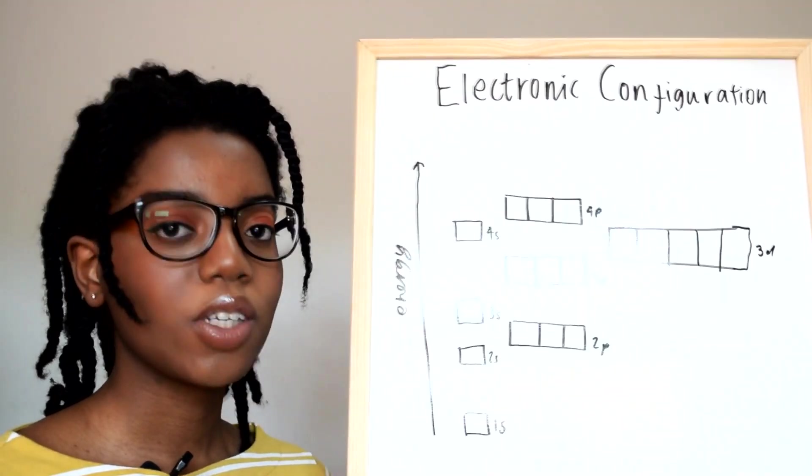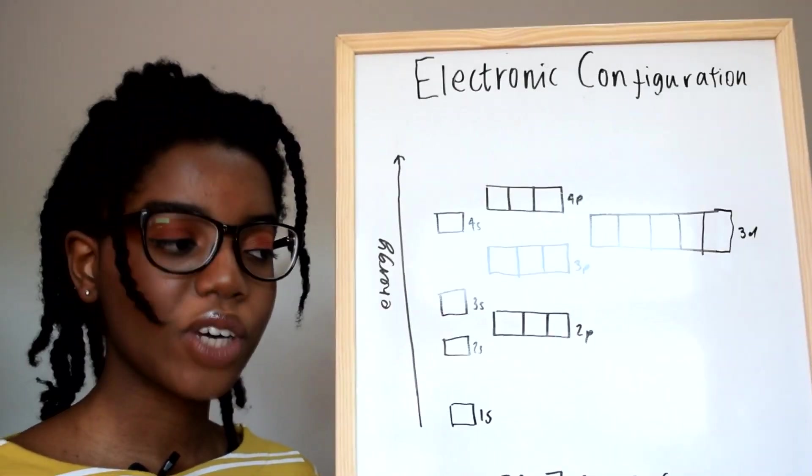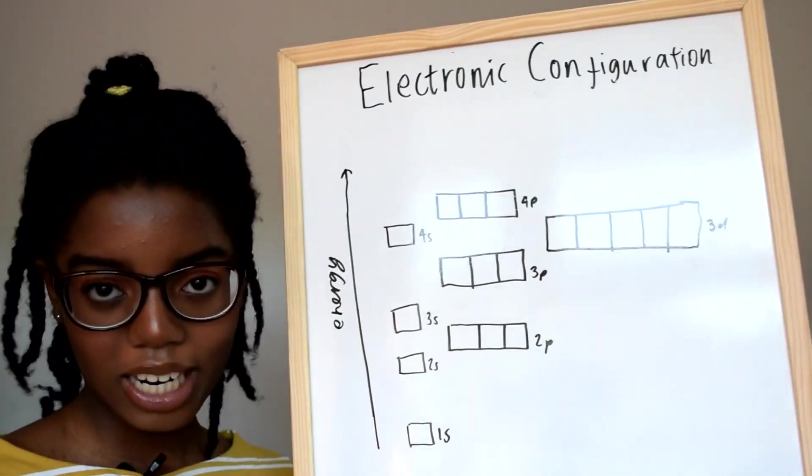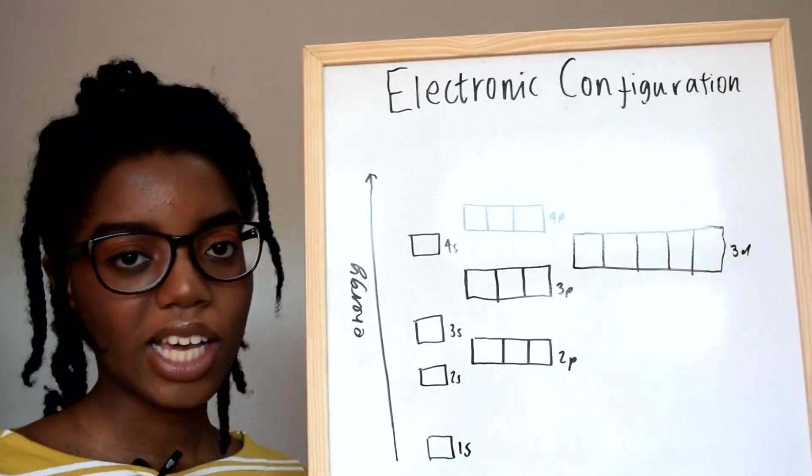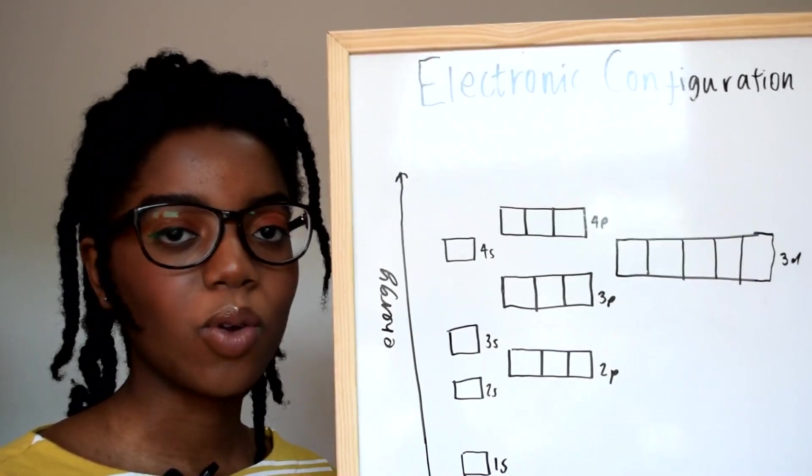To fill this in with electrons we have to use Hund's rule, which as I said before is that the subshell is singly filled before it is filled with each electron, which just makes all of the electrons as stable as possible.